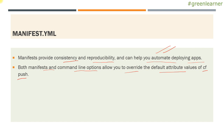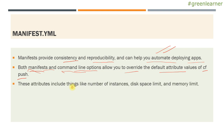When we are using any command like CF push, CF scale, CF stop, or start — any of those — they come with some default attribute values. We can override those default values with command line options that we are using so far, and that we are going to use in manifest also. We can define the values of those attributes in these files. These attributes include things like number of instances, disk space limit, and memory limits. Command line options override manifest.